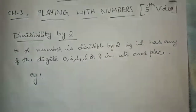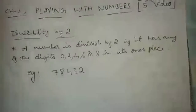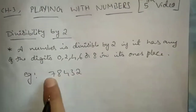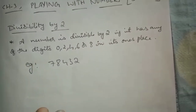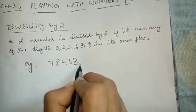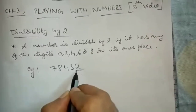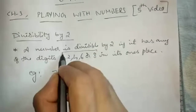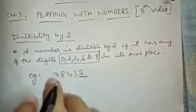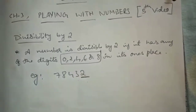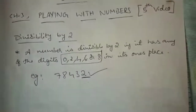For example, without dividing, by seeing the number itself, you have to say whether it is divisible by 2 or not. You have to check the units place — also called the ones place. If you have 0, 2, 4, 6, or 8 in the units place, then you can say that it is divisible by 2. Here, 2 is in the units place, so it is divisible by 2.